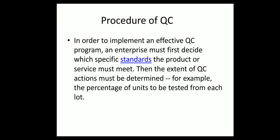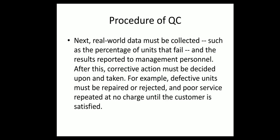For example, if there are 2000 bales, how many bales should be tested — whether it is random testing or sequential testing. That determines QC. Next, real world data must be collected, such as the percentage of units that fail, and the results reported to management personnel. After this, corrective action must be decided upon and taken.